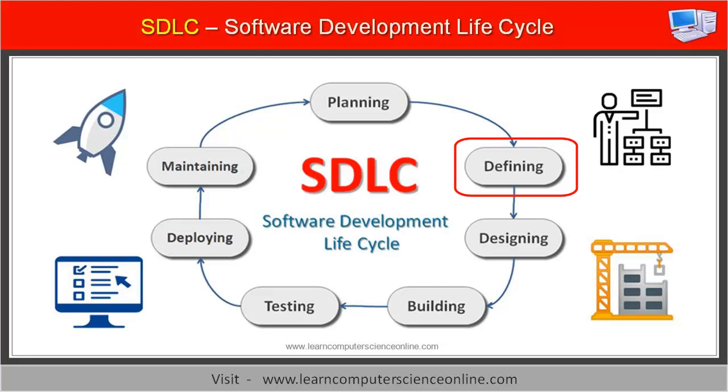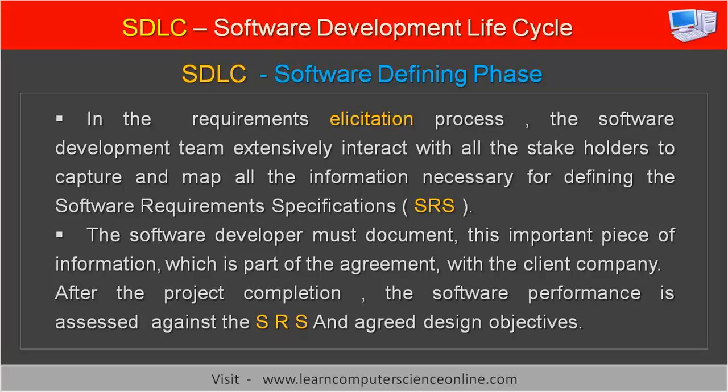The next phase in the software development process is defining the software requirements, also referred to as requirement solicitation. In this process, the software development team extensively interacts with all stakeholders to capture and map all information necessary for defining the software requirements specifications. This user requirements document is abbreviated as SRS. The software developer must document this important information, which forms part of the agreement with the client. After project completion, the software performance is assessed against the SRS and agreed design objectives.